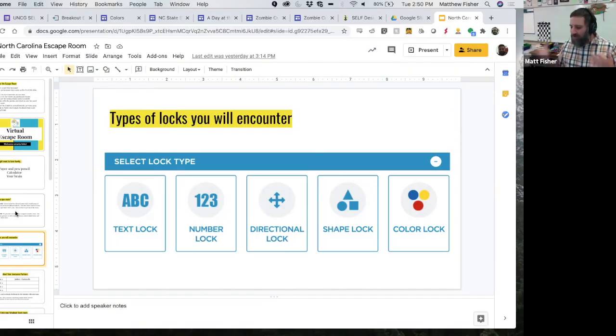Can you show me one or two to give me an idea of what we're talking about? Sure. When we work with students in the virtual breakout rooms, the first thing we do is give them an intro and one of the first things they need to learn is the types of locks they're going to encounter. In these breakout rooms, there's text locks, which are a series of sequence of letters. There's number locks, which are numbers. There's directional locks, which is a sequence of arrows like up, up, down, down, left, right. There's shape locks and then there's color locks.